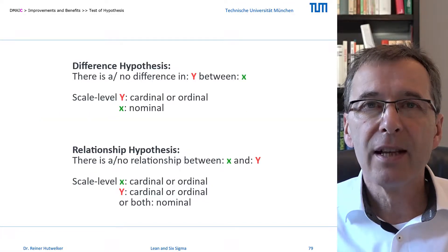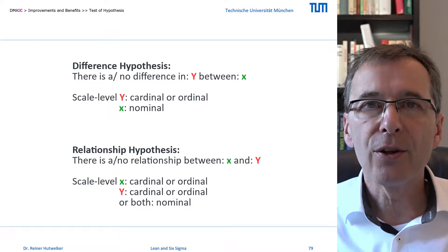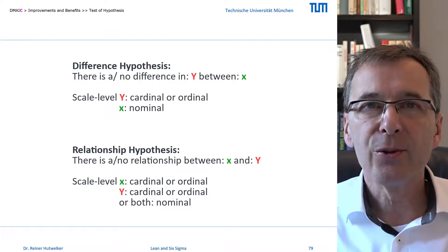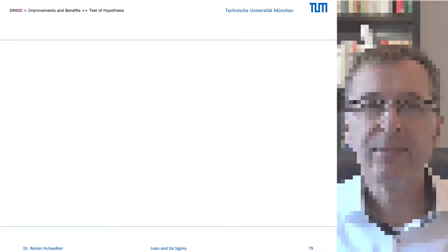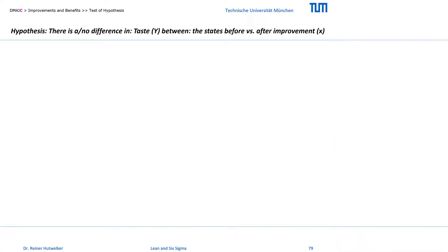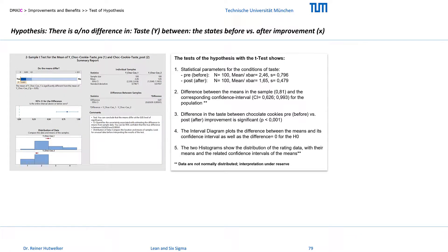You probably remember that the two hypotheses on differences and relationships depend on the content of your assumption and on the scale level of your variables. The standard hypothesis for the control phase is: there is or is no difference in taste between the states of X before versus X after. We will test this hypothesis first for the rating of taste with a t-test to differentiate between the two nominally scaled states.